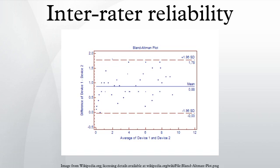It is useful in refining the tools given to human judges, for example by determining if a particular scale is appropriate for measuring a particular variable. If various raters do not agree, either the scale is defective or the raters need to be retrained. There are a number of statistics which can be used to determine inter-rater reliability.